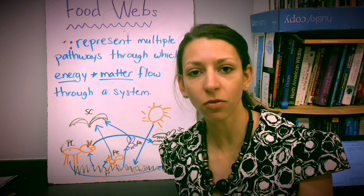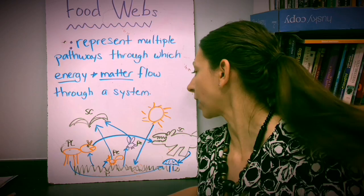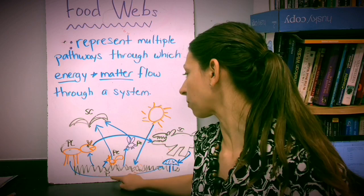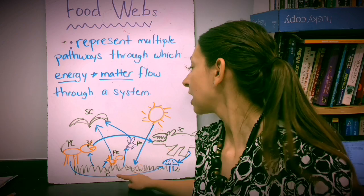So here I have kind of a messy food web drawn, and in our food webs that we'll be making in class, we're going to identify our different individuals within the system using abbreviations or we can label them. So for example, our grass at the bottom here will be labeled with a P for producers, and then our primary consumer can be labeled with PC.